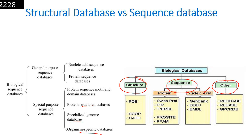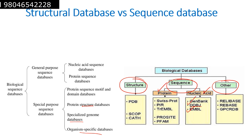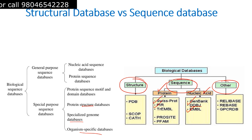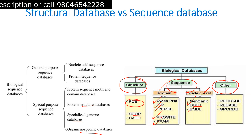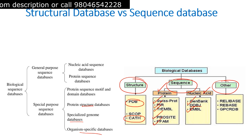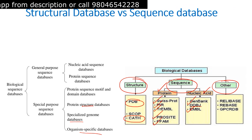In reality, we have structural, sequence, and other types of databases. Sequence databases exist for nucleic acids like DNA and RNA, as well as for proteins. For nucleic acids, examples include GenBank, EMBL, and DDBJ. For proteins, we have Swiss-Prot, PIR, TrEMBL, ProSite, and Pfam. Structural databases include PDB and CATH.